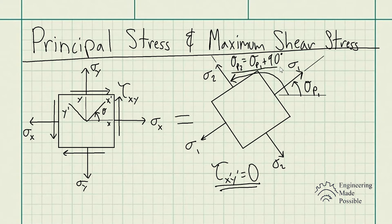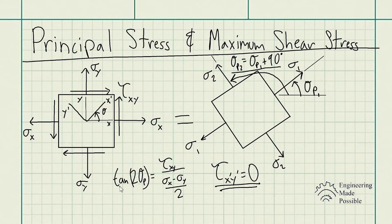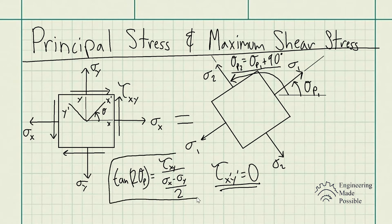The equation to solve for the principal stress angle is: tangent of 2 times theta P equals tau XY (the shear stress) divided by the quantity (sigma X minus sigma Y) divided by 2. You can always solve for the unknown theta P given the normal stresses in the original XY plane.